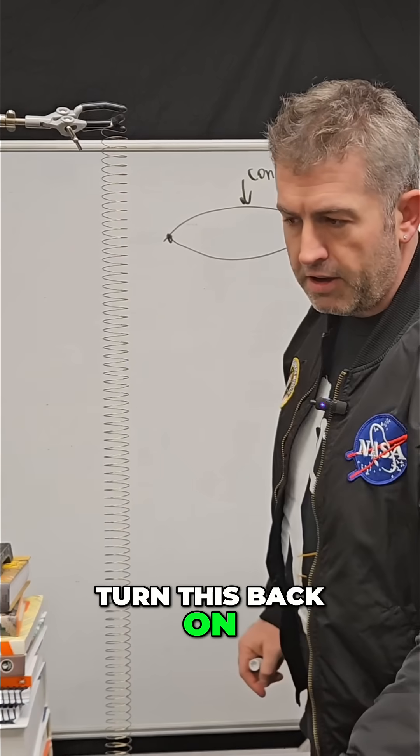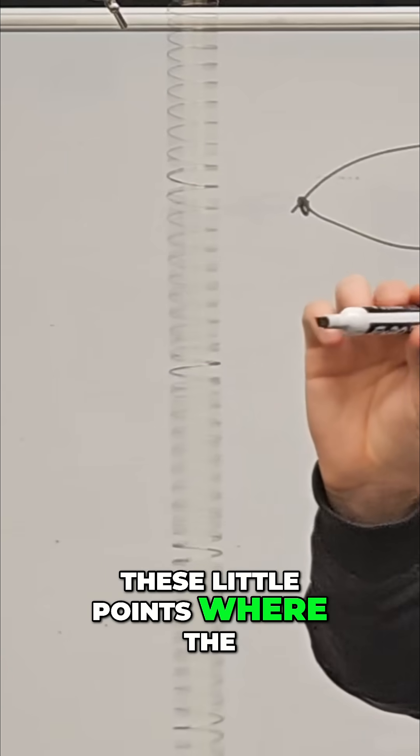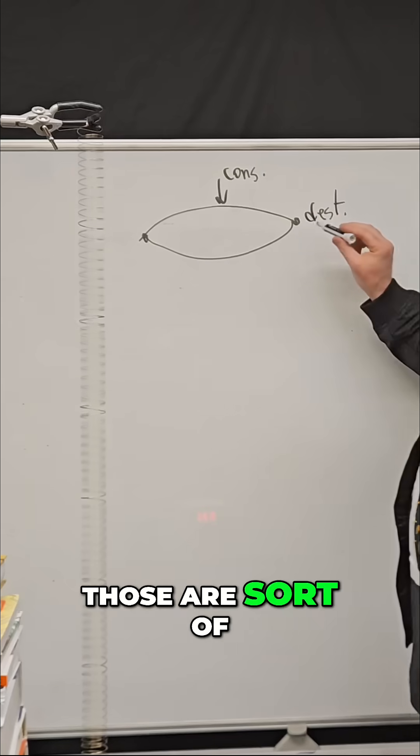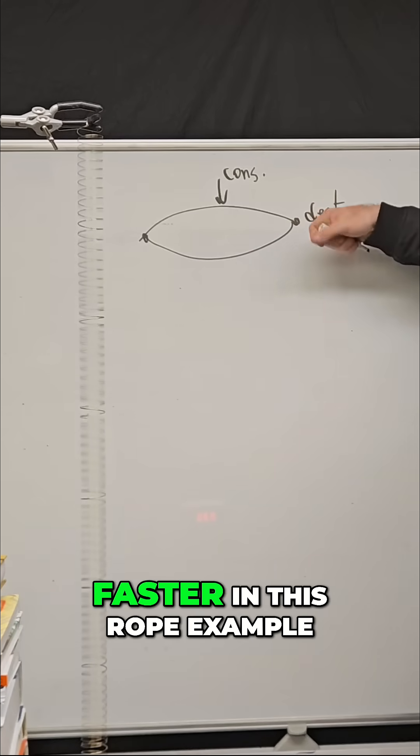And so if I turn this back on and you look at it carefully and you see these little points where the destructive interference occurred, those are akin to these points here. And if I took my hand and I shook it faster in this rope example,